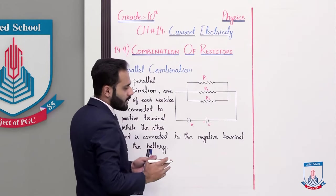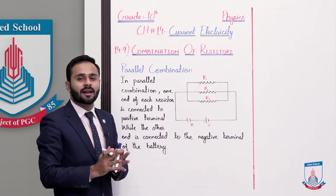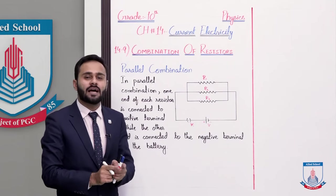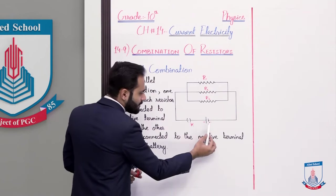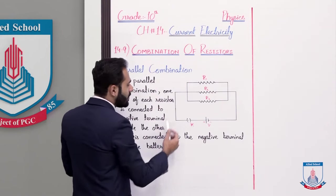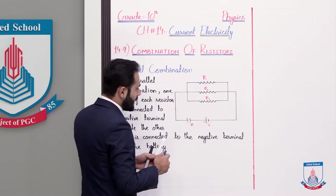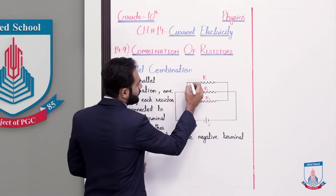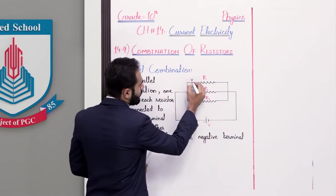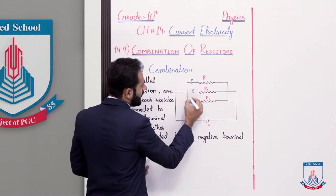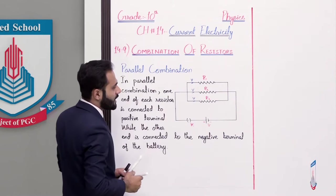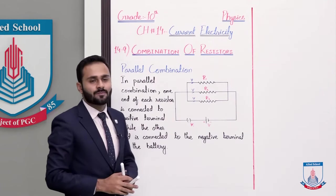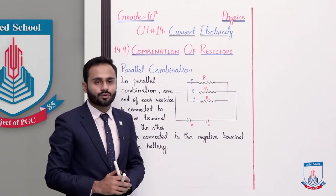So parallel ki case mein current hamesha divide hota hai lekin voltage same rehte hain. That means ke jo voltage yahaan se supply ho rahi hai, wohi voltage move karegi R1 resistor mein, or wohi voltage move karegi R2 resistor mein, or wohi same voltage move karegi R3 resistor mein. Lekin in sab resistor mein current different hota hai.